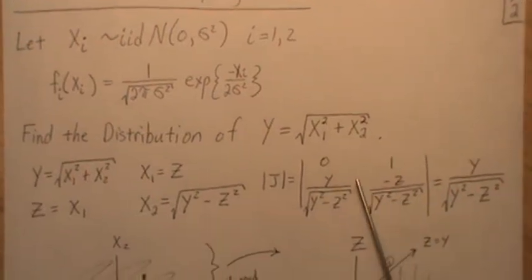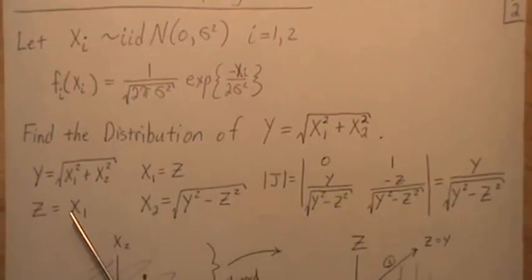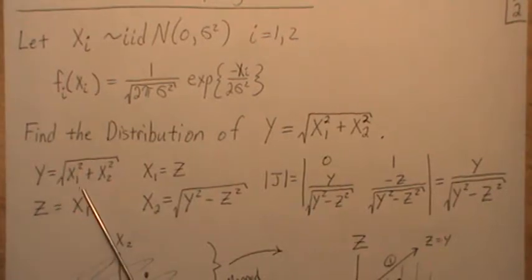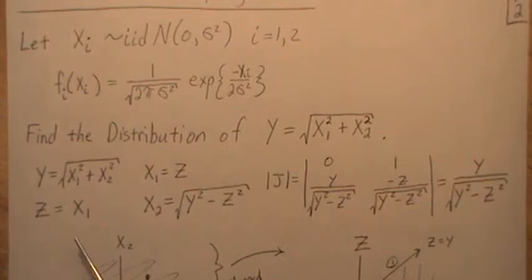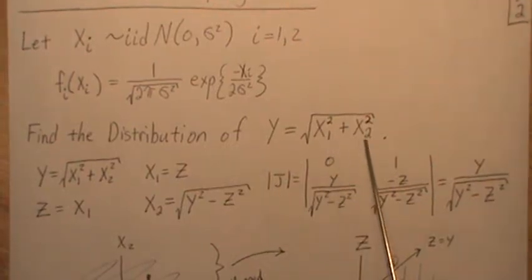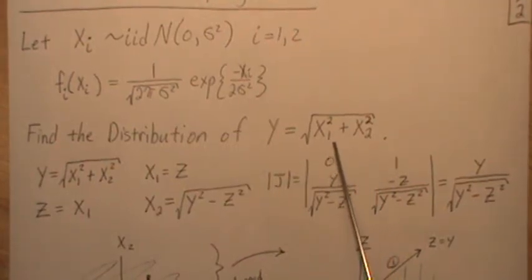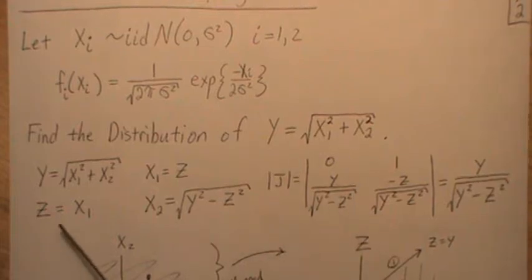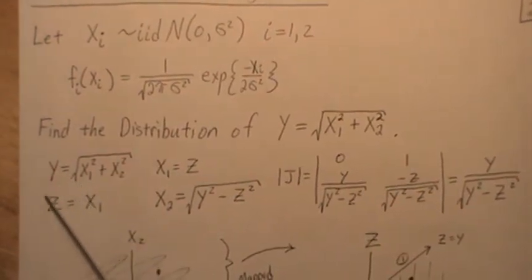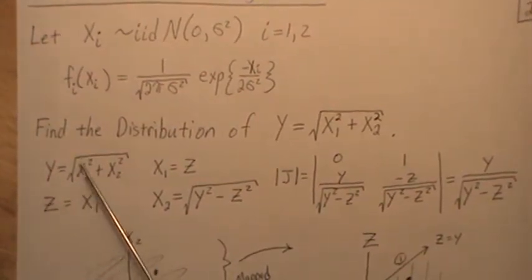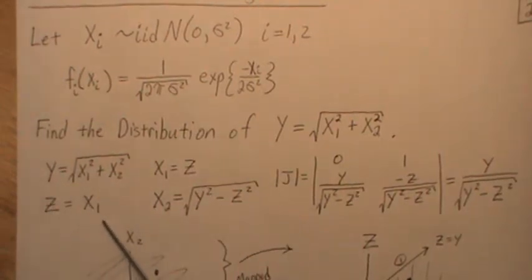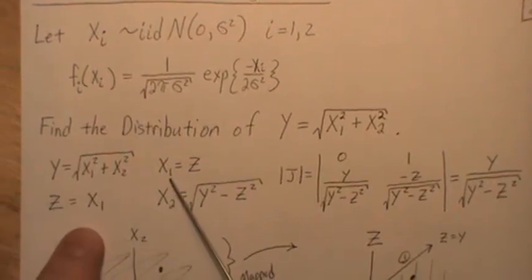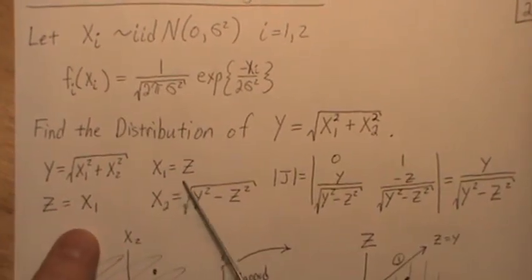And the way we do it, we're going to use a variable transformation. So let's let y equal what we want. And since we're going from R2 space, we need to go to R2 space, but then we'll later integrate this variable out, leaving just f of y. So let's let z equal x1. Now to back transform this, that means x1 is z. That's kind of a no-brainer.